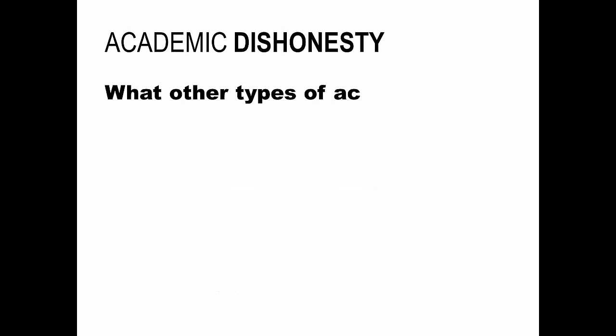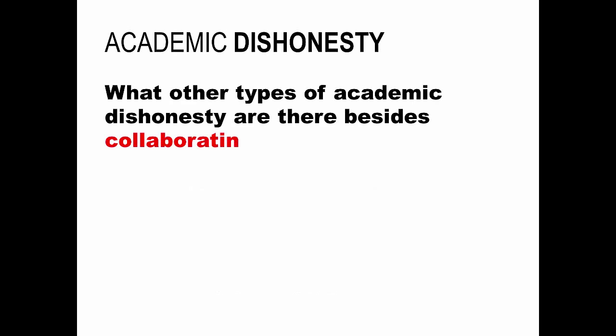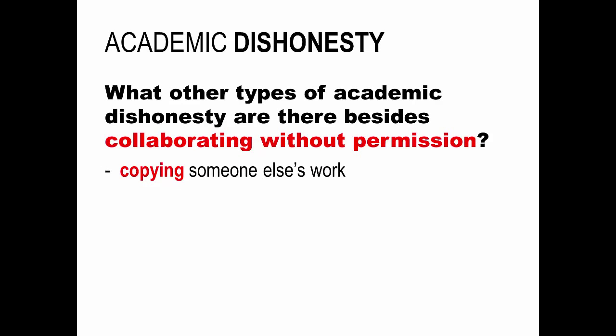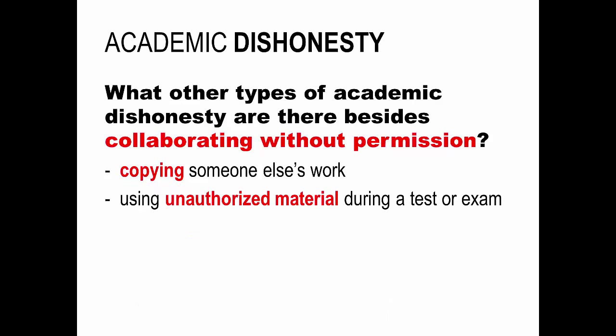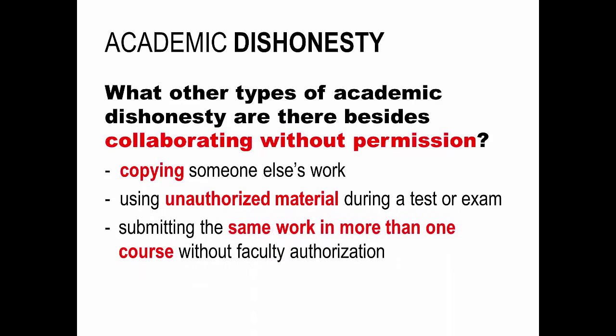What other types of academic dishonesty are there besides collaborating without permission? Other types of academic dishonesty include copying someone else's work, using unauthorized material during a test or an examination, submitting the same work in more than one course without faculty authorization, and plagiarizing someone else's work.